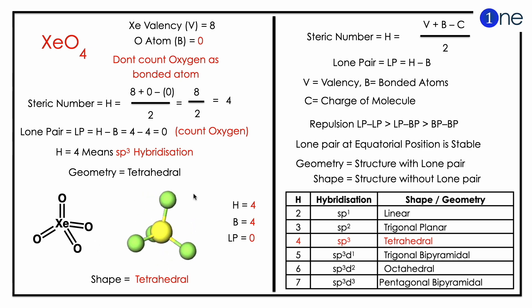V plus B minus C, whole divided by two. Xenon is the central metal atom, so valence is eight. Oxygen we should not count from our theory, so it is zero. So steric number will be eight plus zero by two, which gives four. For the lone pair calculation, you should include oxygen, so the lone pair will be zero.